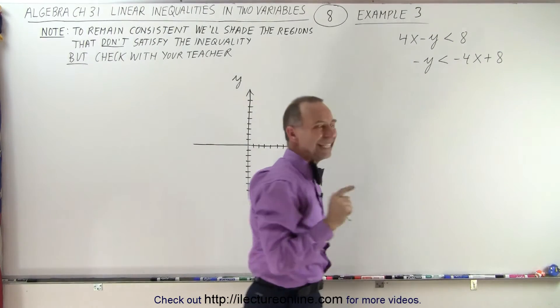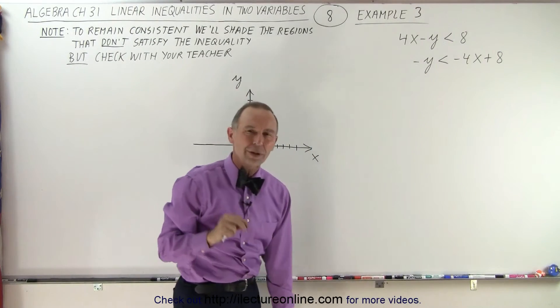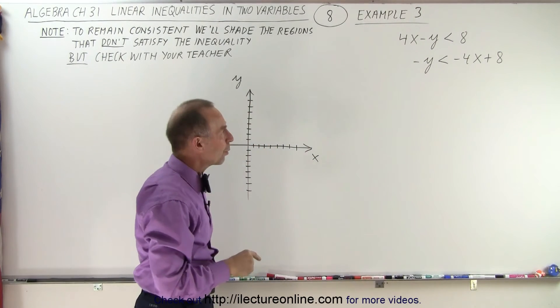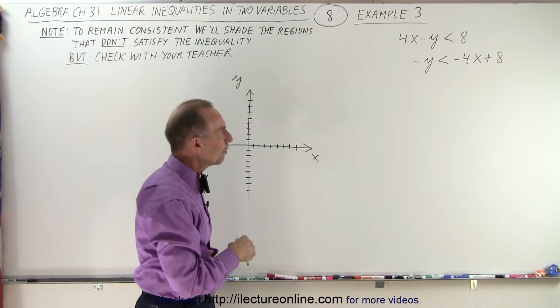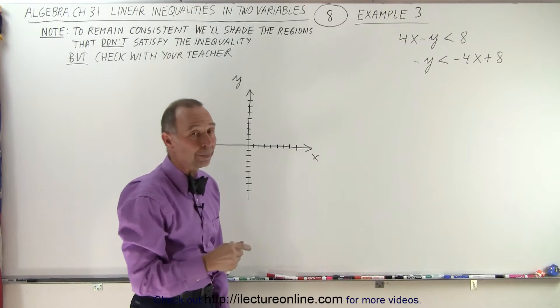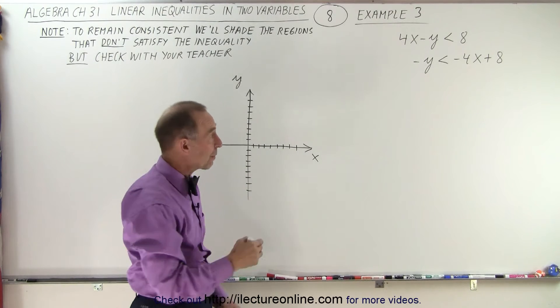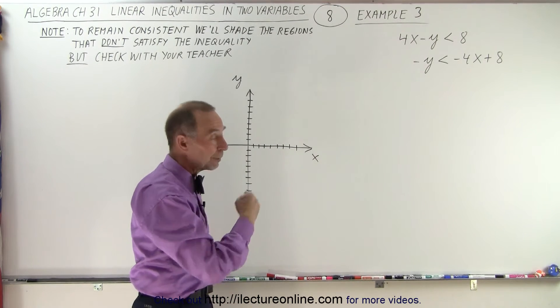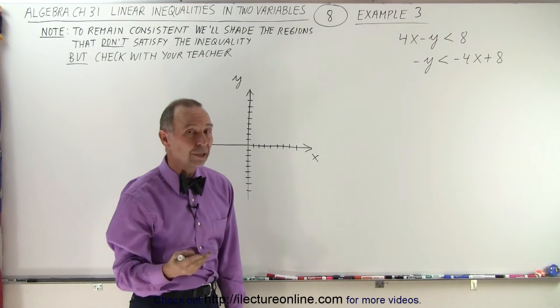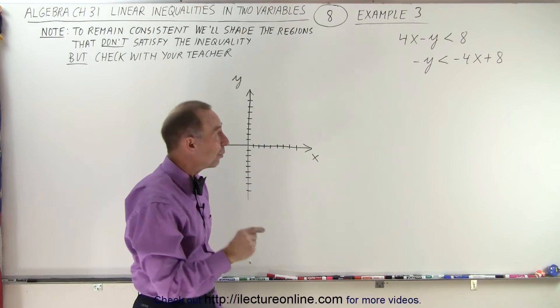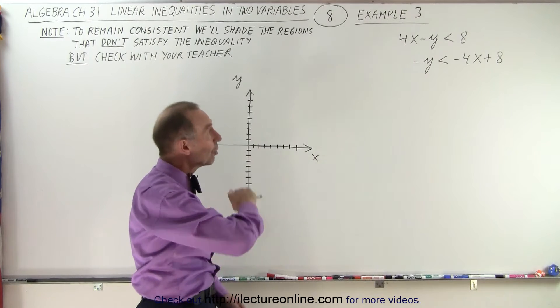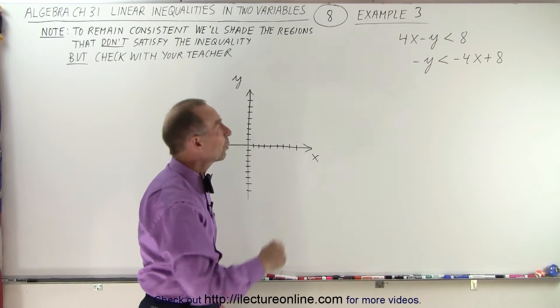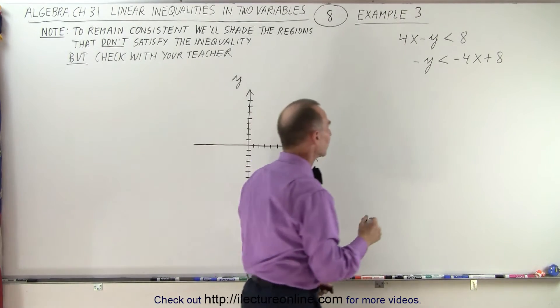But now we have a negative y. We don't like the negative y — we want to turn that into a positive y. But remember, when we have inequalities and we multiply both sides of the inequality by negative 1, we need to change the inequality symbol around.